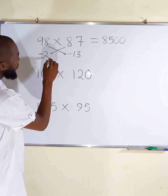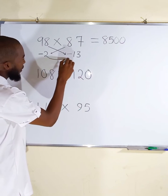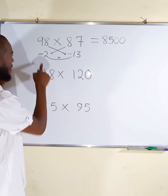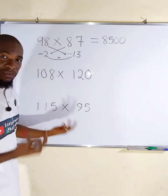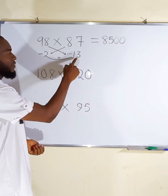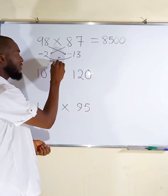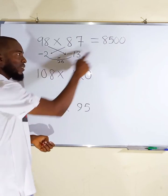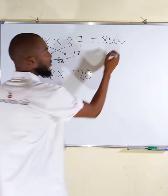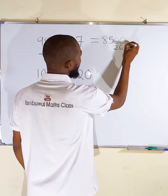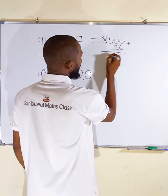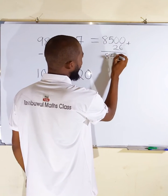Second step, multiply these two numbers together. Minus times minus will give us plus, then 2 times 13 is 26. This 26 is added to this number, so if I add 26 here I will get 8526.